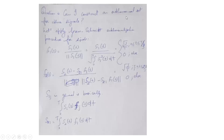The question is: can we construct an orthonormal set for these signals? Let us apply the Gram-Schmidt orthonormalization procedure. We define the first basis function f1(t) as s1(t) divided by the norm of s1(t). The norm is expressed as the square root of the integral from 0 to T of s1²(t) dt. Solving this, f1(t) comes out to be √(3/T) from 0 to T/3, and 0 otherwise.